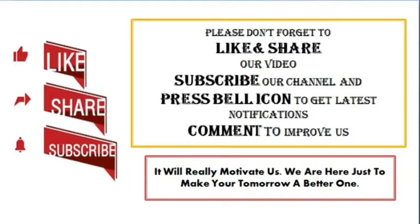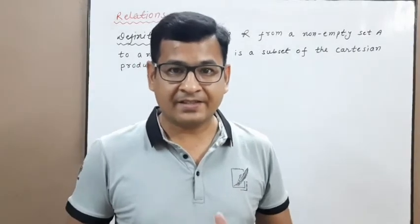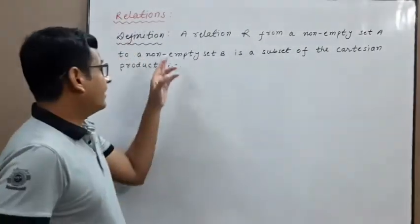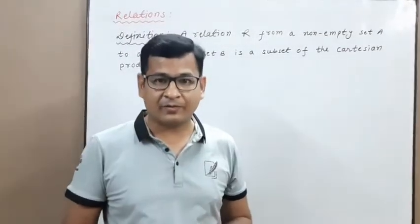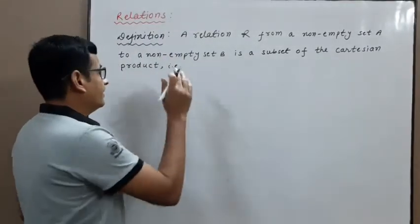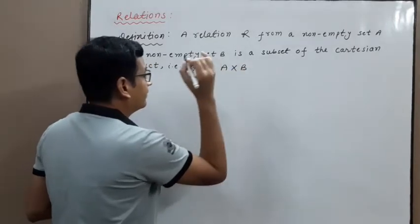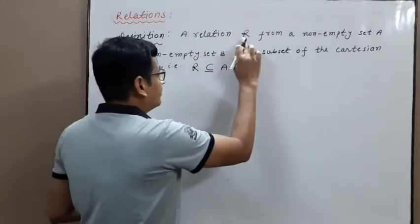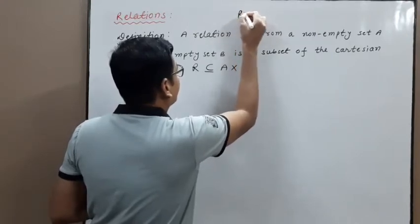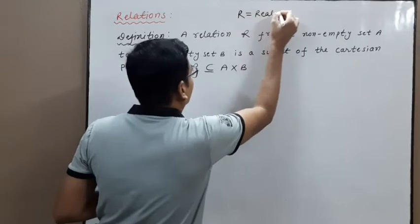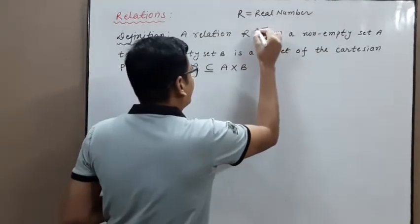Please don't forget to like, share and subscribe. Hello students, today we are going to discuss relations. First, the definition: a relation R from a non-empty set A to a non-empty set B is a subset of the Cartesian product A cross B, that is R is a subset of A cross B. Note that this R is used for relation, not for real numbers.